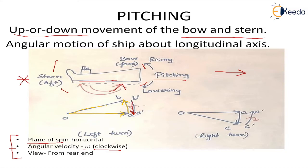When the ship takes a right hand turn, the initial position remains OA. The new position becomes OC, so AC is the active gyroscopic couple and C'A' shows the reactive gyroscopic couple. When we apply the right hand thumb rule, the fingers curl in this direction and the thumb shows the direction of the reactive couple, which is in the clockwise direction. Applying this clockwise gyroscopic couple, the stern is raised and the bow is lowered.